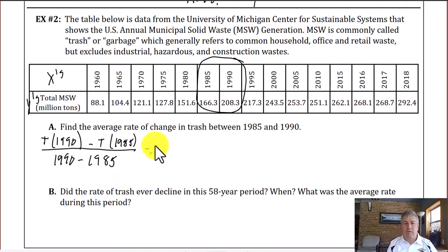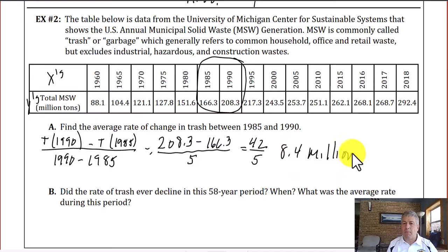So our t values, 208.3 minus 166.3 are our y values, all over 1990 minus 1985 is 5. So our change in x is 5 years. And that comes out to 42 over 5 which is 8.4 million tons per year.